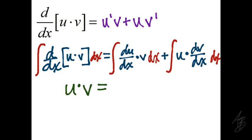Simplifying the left side, we get u times v. On the right side, the dx's cancel, so we have the integral of v du plus the integral of u dv.